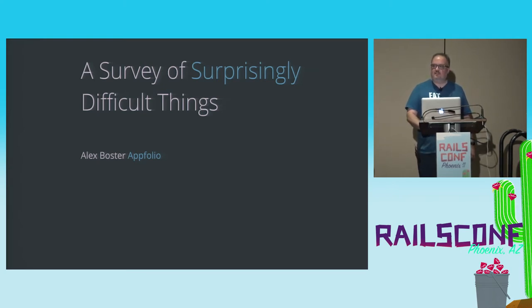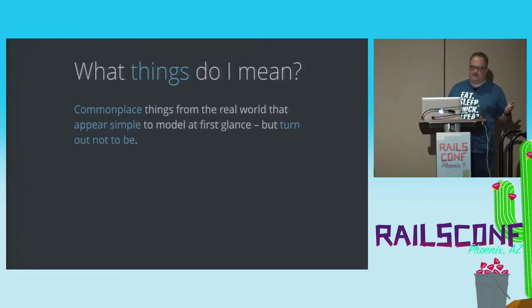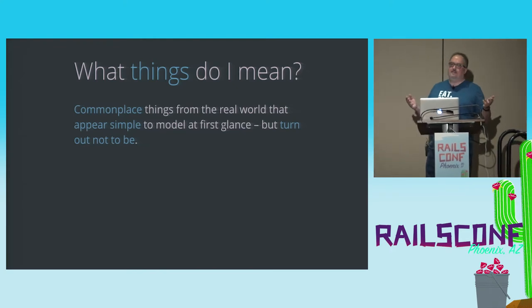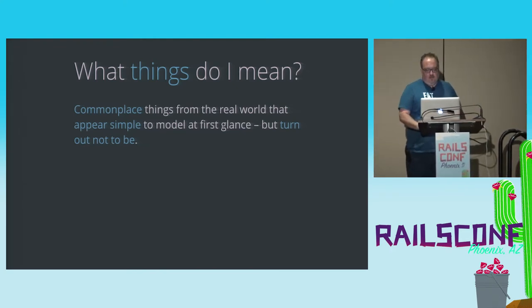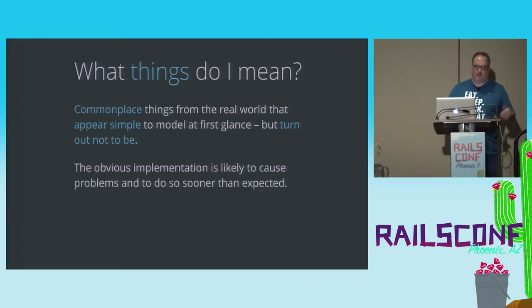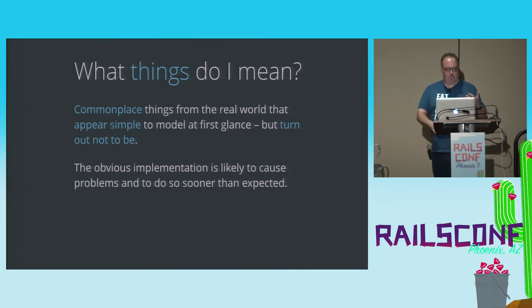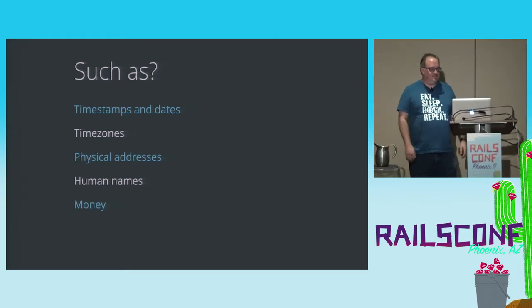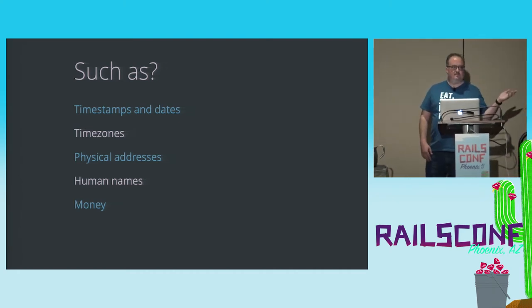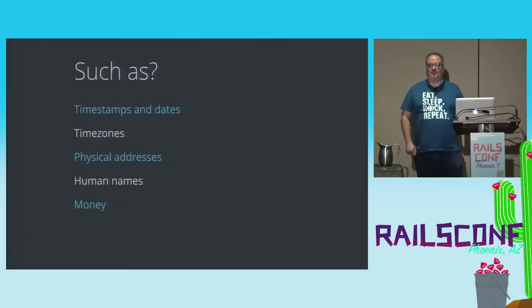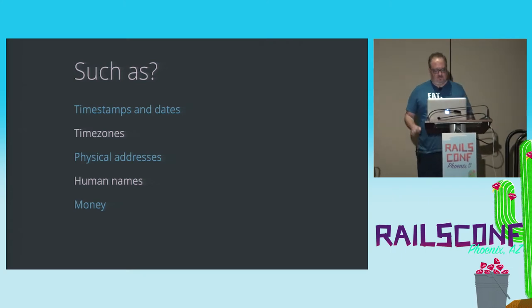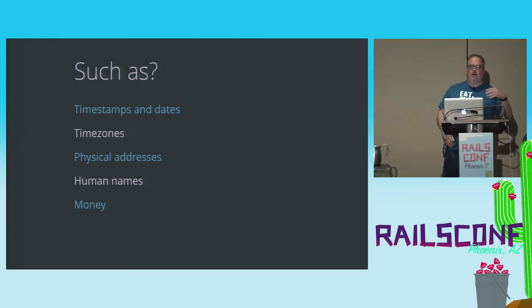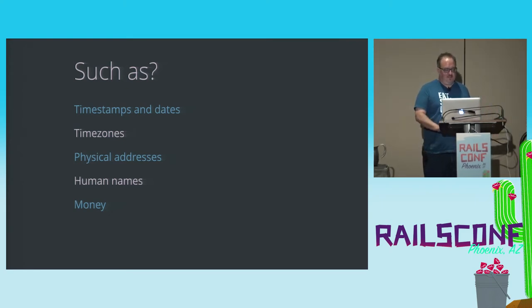This is a survey of surprisingly difficult things — commonplace things that you know all about in your day-to-day life. They seem easy to model, and you model them, and they're great, and then it turns out it's actually a lot harder than that. Things where the obvious implementation may very well cause problems. These are things like timestamps, time zones, physical addresses, human names. I'm not going to talk about cache invalidation or distributed systems — this is about real-world stuff.